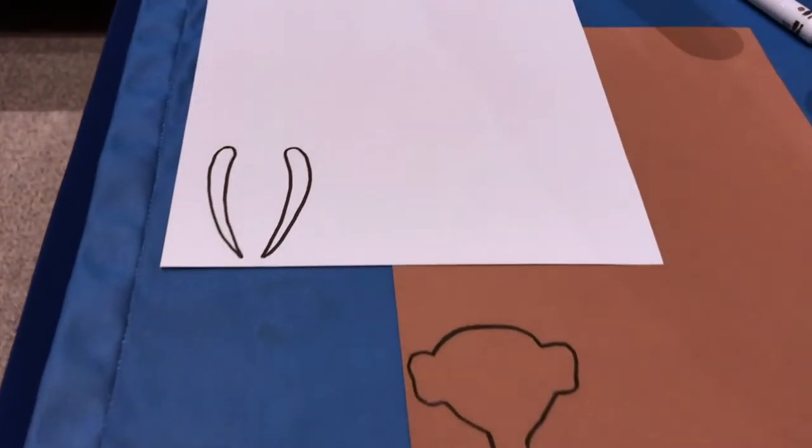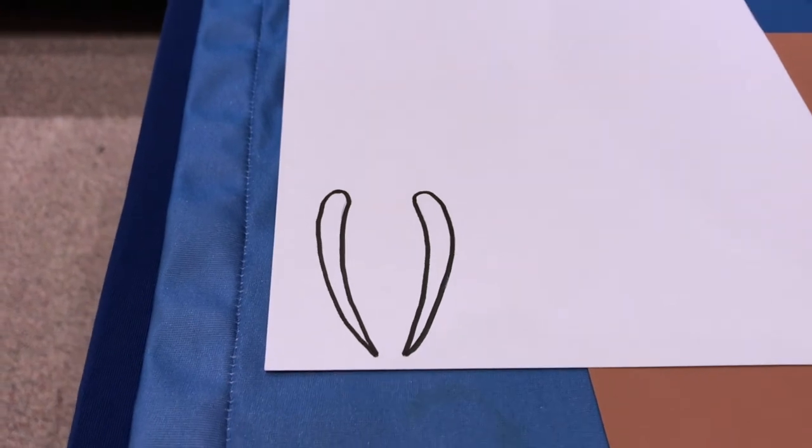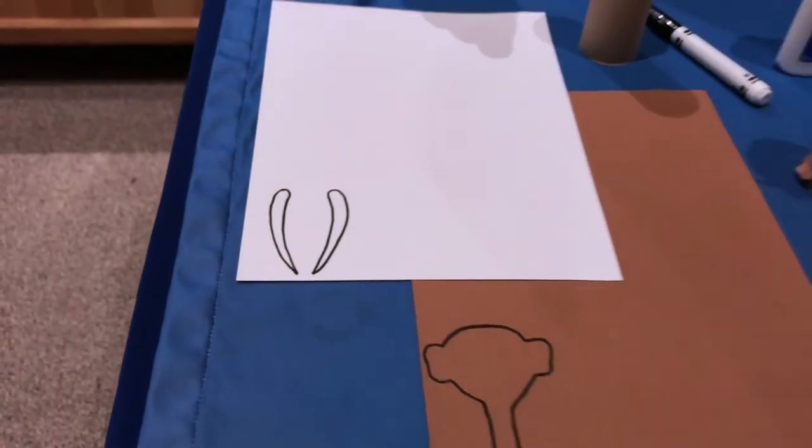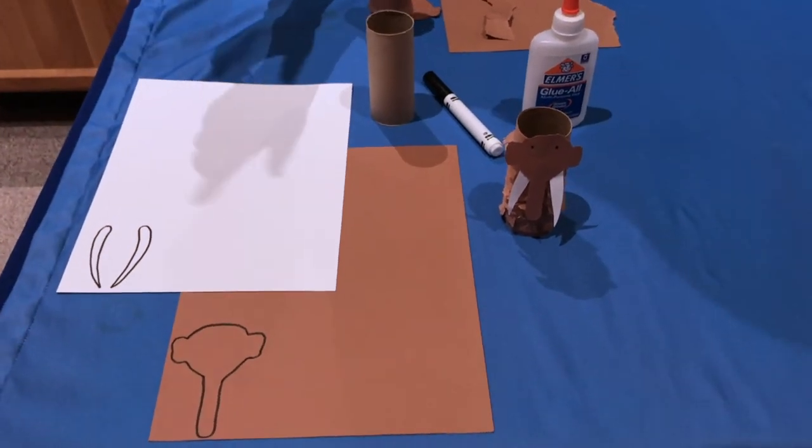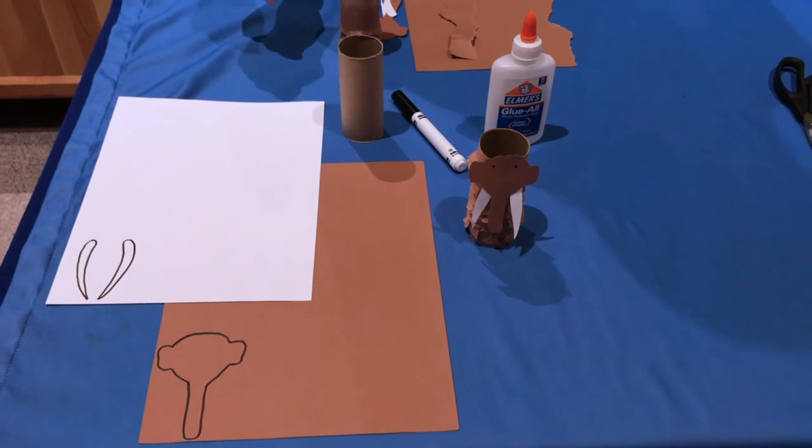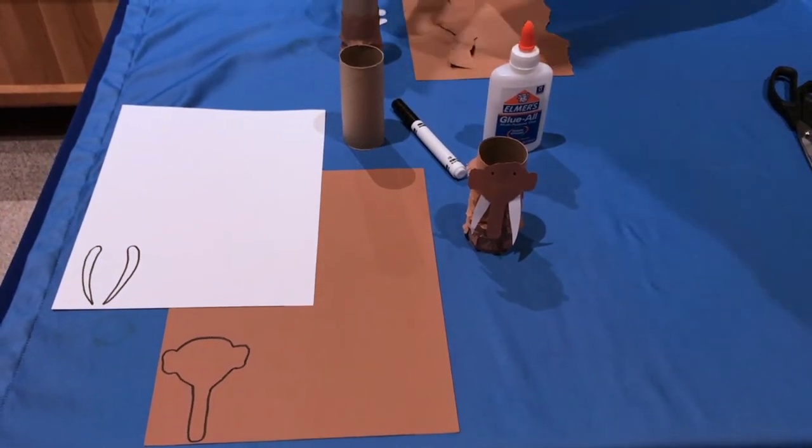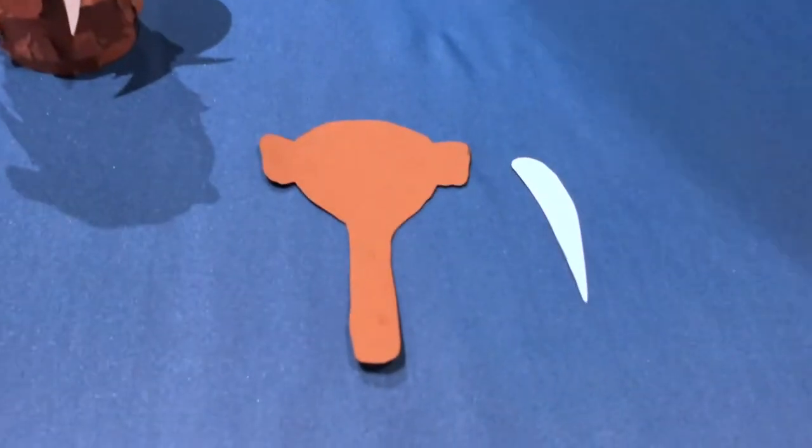And on the white paper I drew some tusks, wider, shorter, and less curved than the mammoth, remember. Now to make it easy on yourself, you can draw just one, fold the paper in half, and then that way you just have to cut once and they'll be the same size and shape. So when you're done you'll have a head and two tusks.